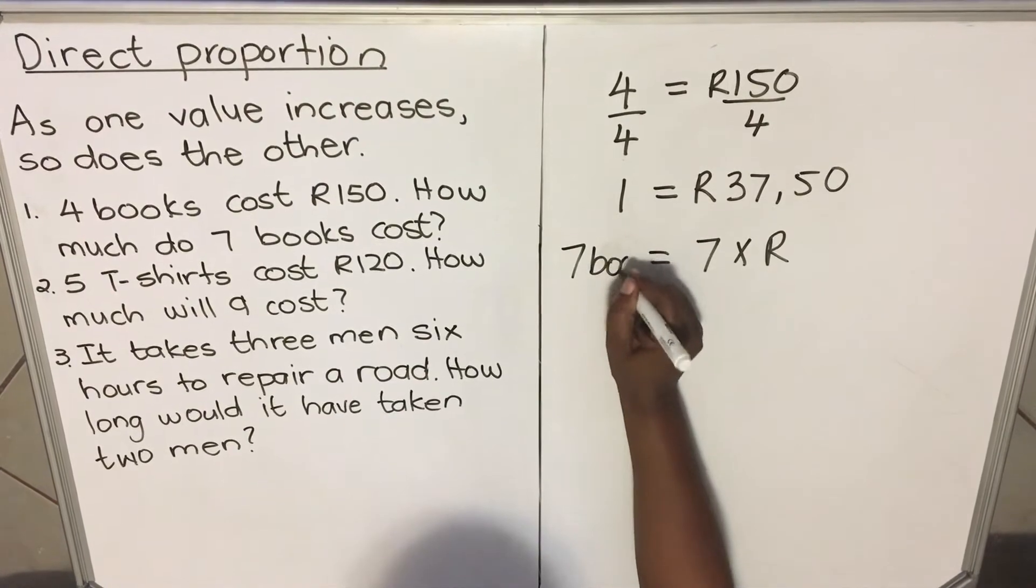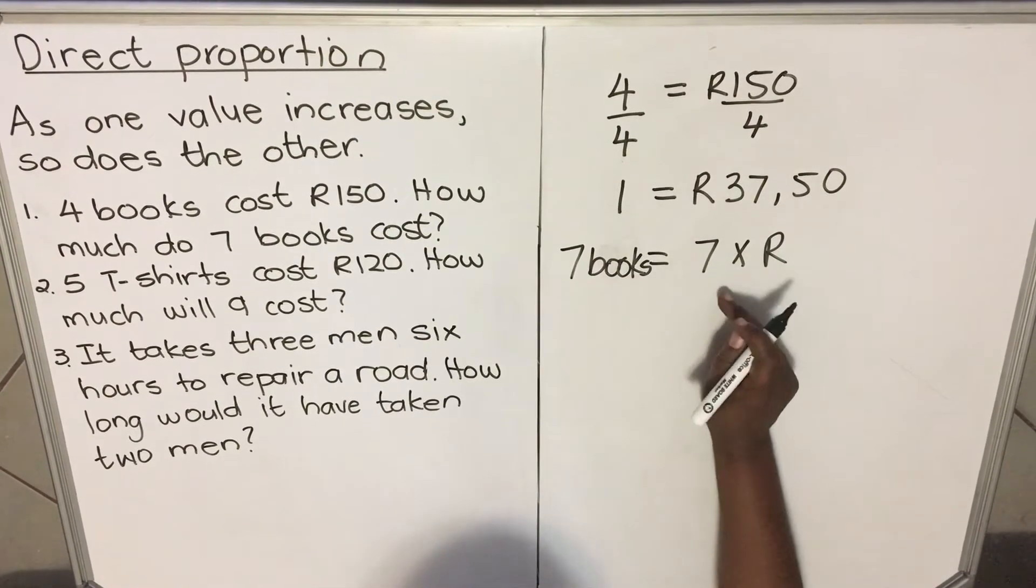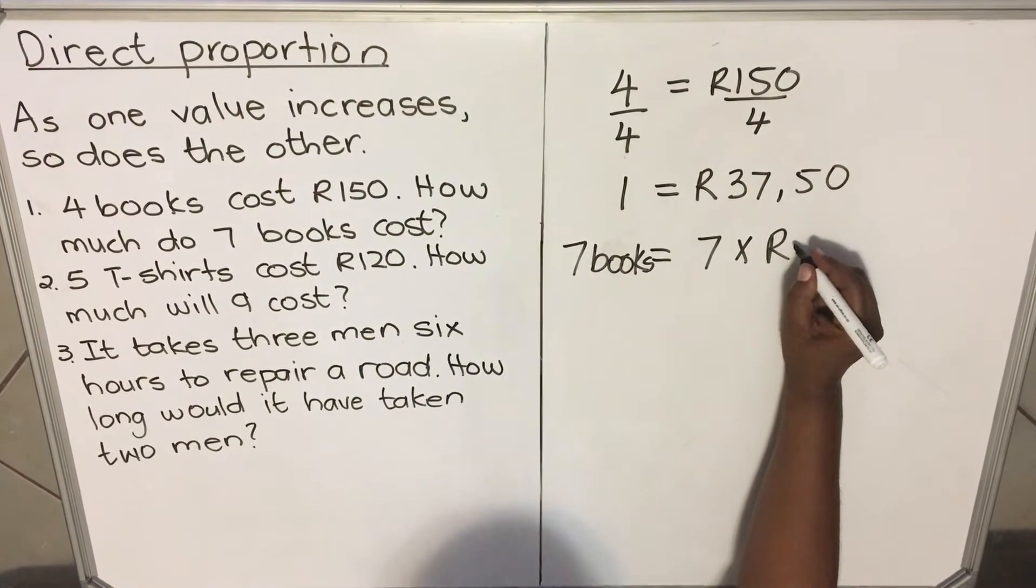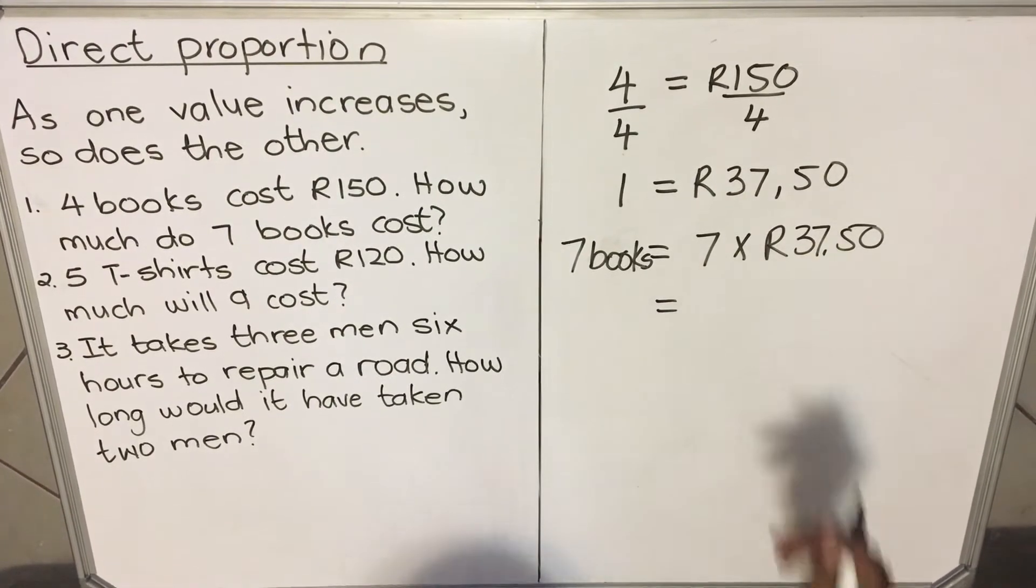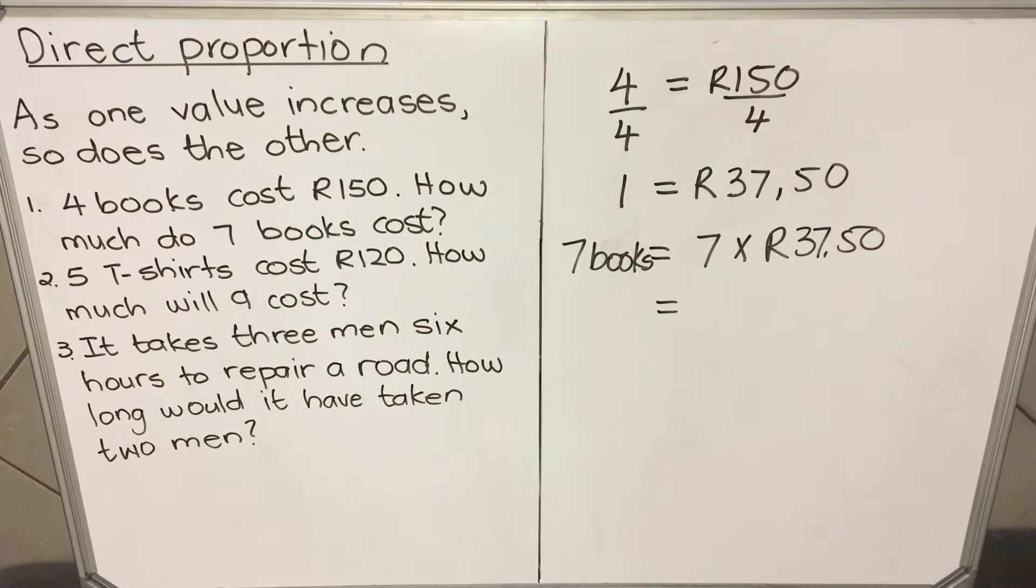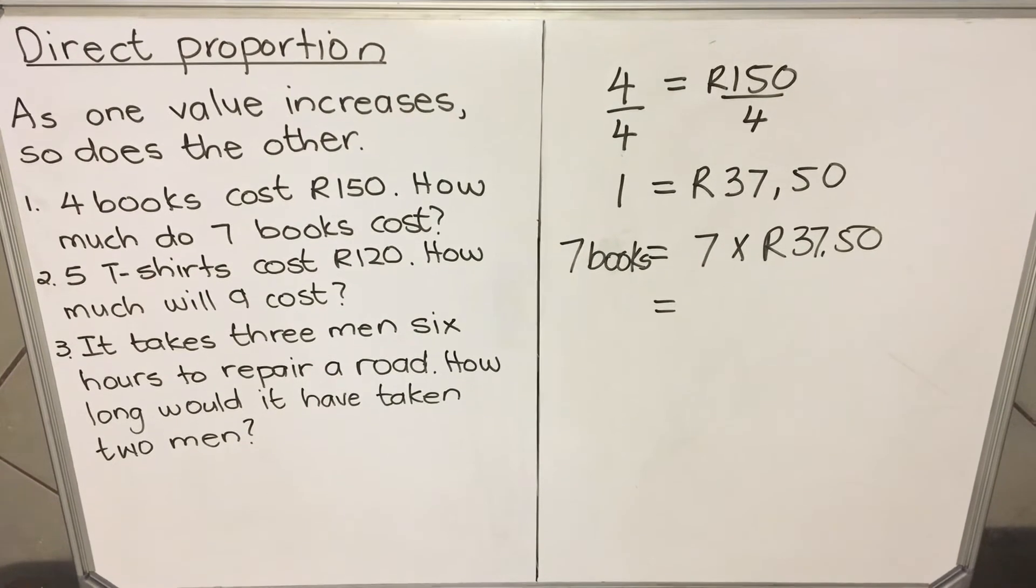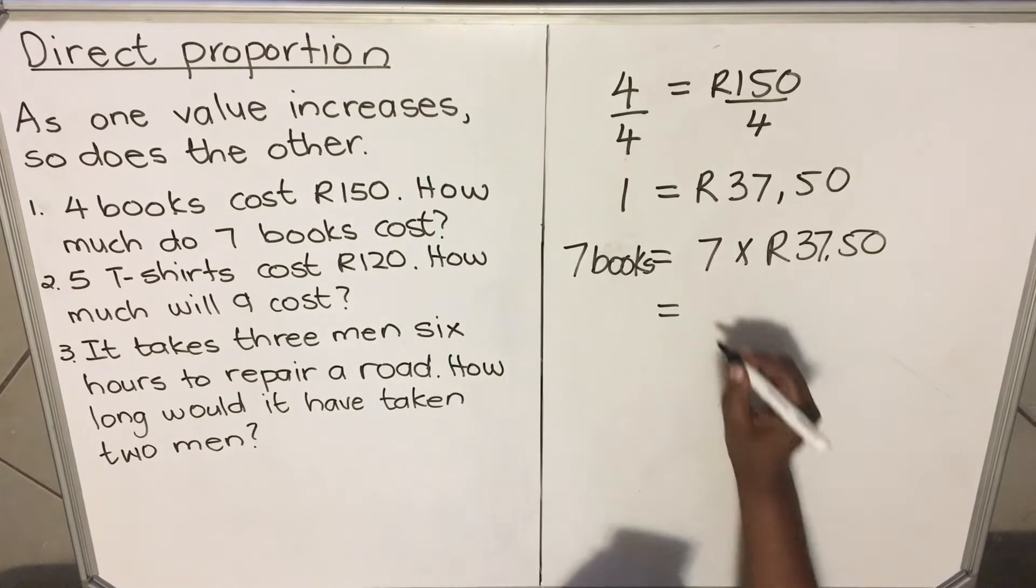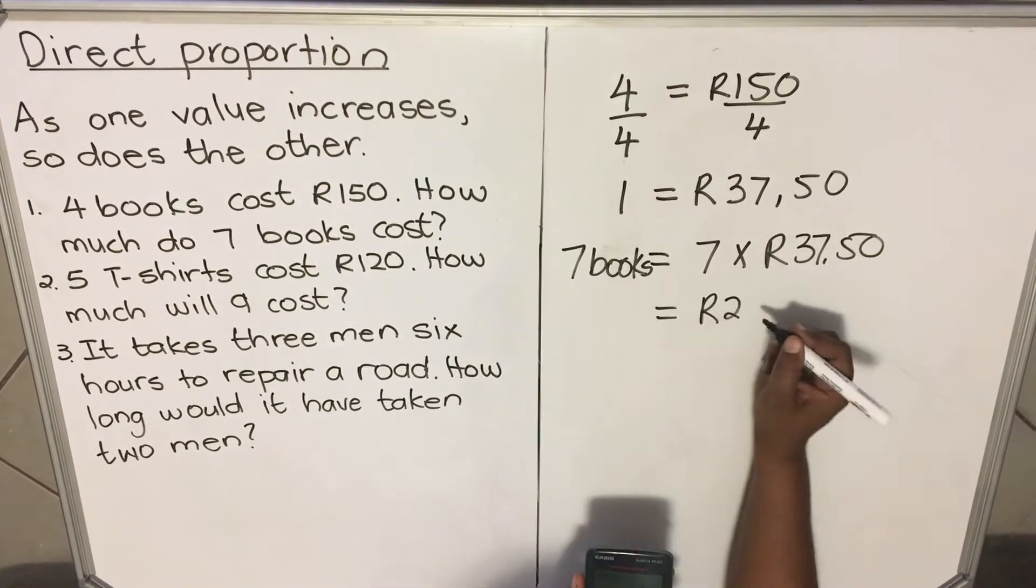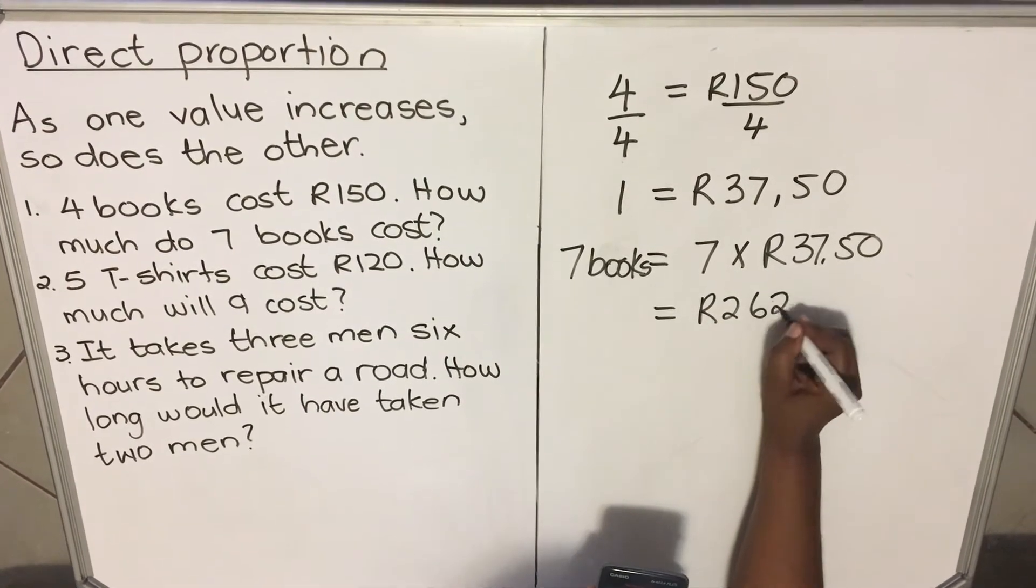Seven books will cost seven times. One book cost R37.50, so seven books will cost seven times R37.50.